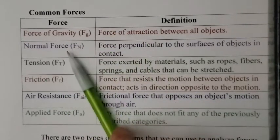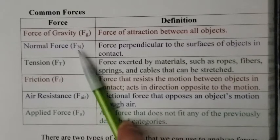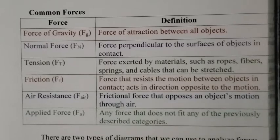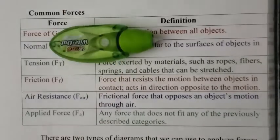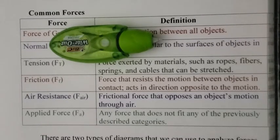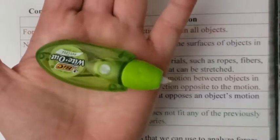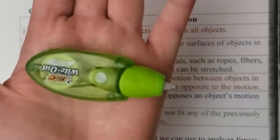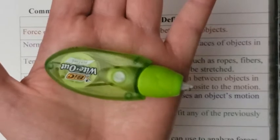Next is a normal force, force normal, capital N for normal. It's a force perpendicular to the surface of objects in contact. So basically, this object here, my little white-out, is being pulled down because of the force of gravity, but it's not crashing through my desk or this piece of paper. And that's because the desk is holding it up. That's the force of normal. If I held it in my hand, well, the gravity is pulling it down, but it's not crashing through my hand because my hand is holding it up. That's the force of normal.